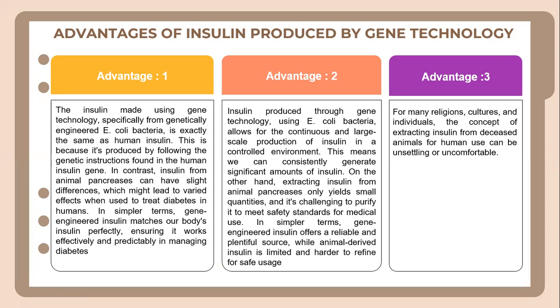Secondly, insulin produced through gene technology using E. coli bacteria allows for continuous and large-scale production of insulin in a controlled environment. This means we can consistently generate significant amounts of insulin. On the other hand, extracting insulin from animal pancreases only yields small quantities and it is challenging to purify to meet safety standards for medical use. In simpler terms, gene-engineered insulin offers a reliable and plentiful source, while animal-derived insulin is limited and harder to refine for safe usage.